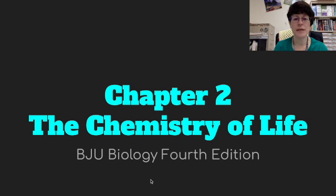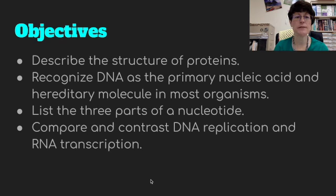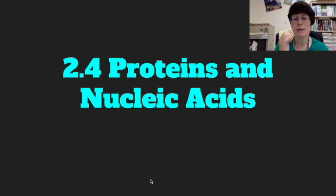Hello everybody, it's Mrs. Pound and we are on the last video for Chapter 2, The Chemistry of Life from BJU Biology, 4th edition. Today we're continuing on with our discussion about organic chemistry. Today's objectives are going to be to describe the structure of proteins, recognize DNA as the primary nucleic acid in a hereditary molecule in most organisms, list the three parts of a nucleotide, and compare and contrast DNA replication and RNA transcription. Our topic, as you probably got from the objectives, are proteins and nucleic acids.